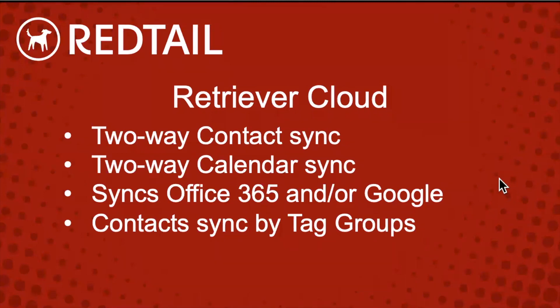Retriever Cloud syncs with Office 365 or Google Calendar. So even though iCal can sync with Google Calendar as view-only, if you're a heavy Google Calendar user and want all items to sync back to Redtail, Retriever Cloud is the option you want. The difference from Retriever for Tailwag is that contacts sync by tag groups, not quick lists, because we need to select those contacts as part of a specific list.